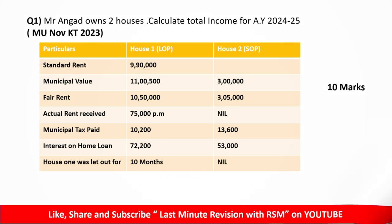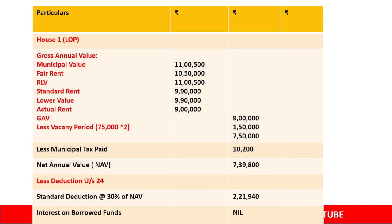Now let's solve House One. First, take Municipal Value: ₹11,50,000. Then take Fair Rent: ₹10,50,000. The rule is — Municipal Value and Fair Rent, whichever is higher. Here, ₹11,50,000 (Municipal Value) is higher, so that becomes your RLV — Reasonable Let Out Value.